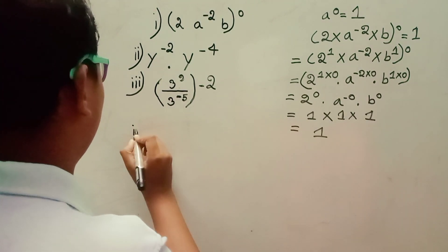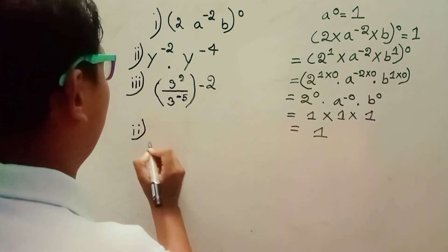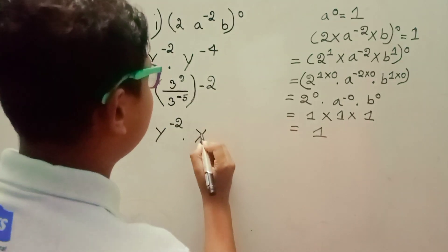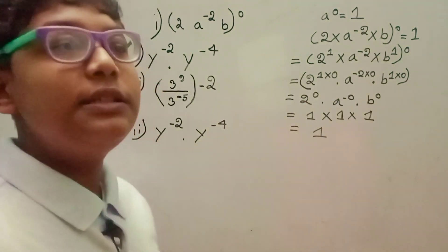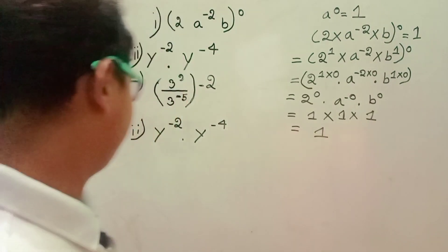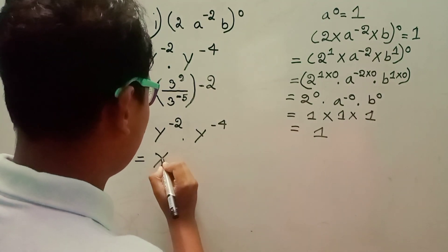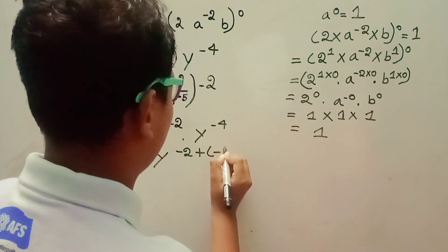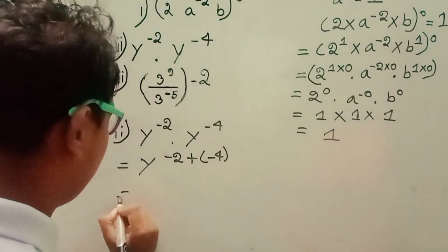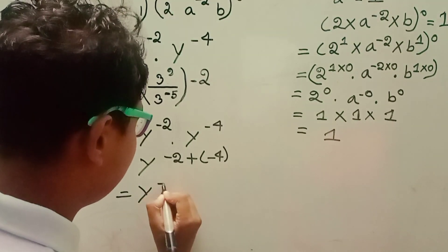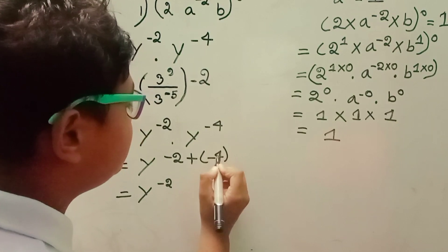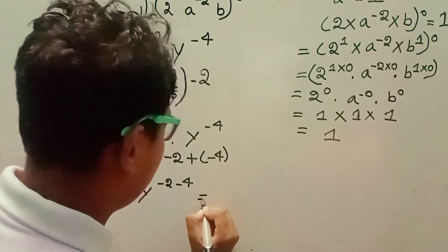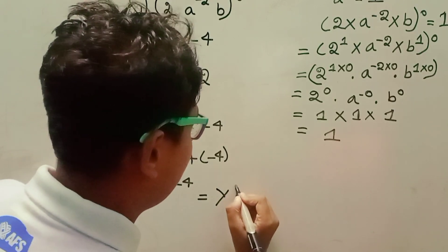Number two: y to the power minus two, into y to the power minus four. Same base, so the powers will be added: y to the power minus two plus minus four, equal to y to the power minus six.